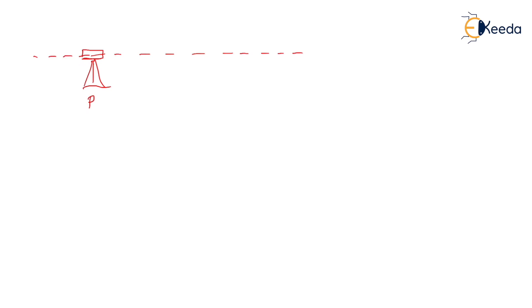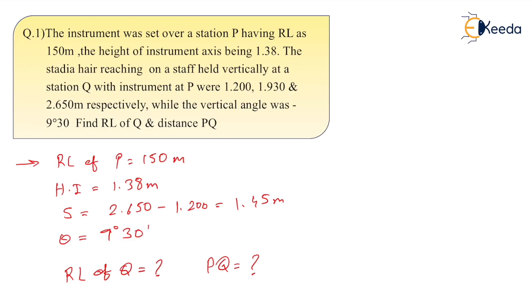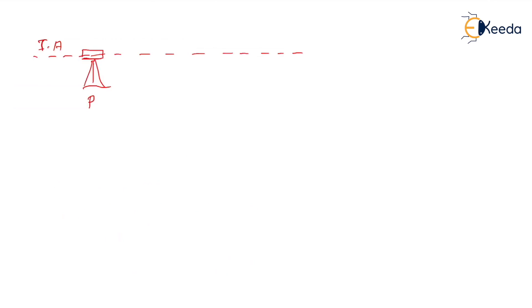Now as we can see, we have the angle equal to minus 9°30'. Minus means it is in depression. So your point Q is in depression, so Q is here. You are bisecting Q from P.